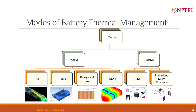In active thermal management, one of the options is the air cooling system. Since we have to maintain temperature between 25 to 35 degrees, if my ambient condition is 45 degrees, how will air cool my battery? If I simply take air from the ambient and throw it inside the battery pack, it will increase the temperature instead of decreasing it. So what we have to do is cool the air to a defined limit so that it can cool the battery and take out the heat generated by the battery pack.